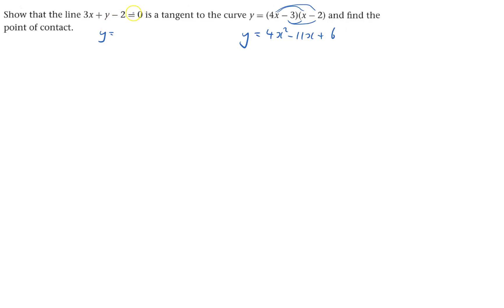This bit here, add 2 to both sides and then take away 3x. And then y equals this, so basically I'm going to say y is that, or I could just say they're both equal each other. So 2 minus 3x equals 4x squared minus 11x plus 6.